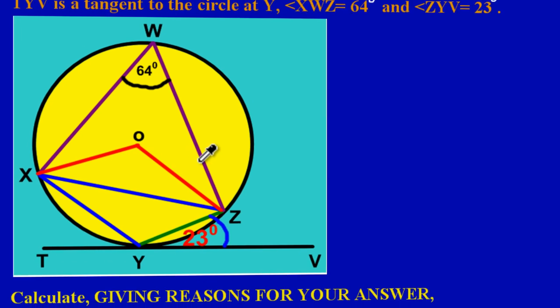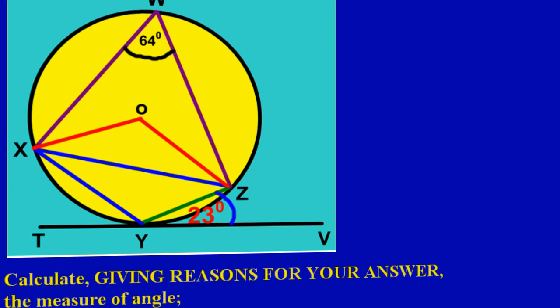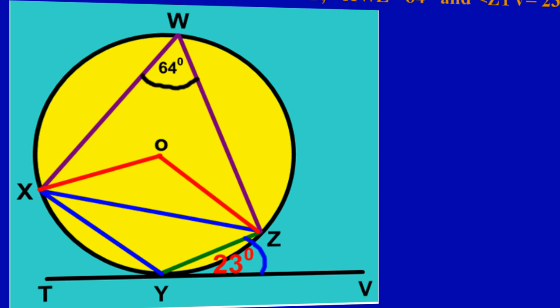They're asking us to calculate, giving reasons for your answer, the measure of angle XYZ — that's an easy two marks. Let's identify that angle quickly. The angle XYZ — remember the letter in the middle is where the angle is being formed — so we want to find this angle right here, at point Y.